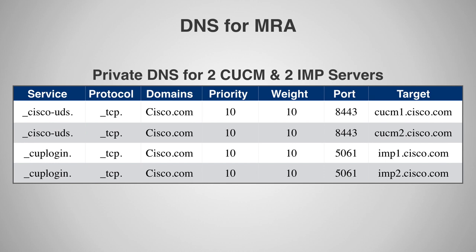The CUCM and IM and Presence server SRV records must not be resolvable from outside the internal network — otherwise your endpoints won't use MRA through your edge server. Here are some examples of the SRV records you'll need for private DNS, for two CUCMs and two IM and Presence servers clustered together.